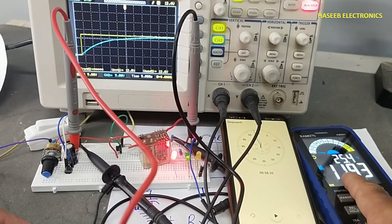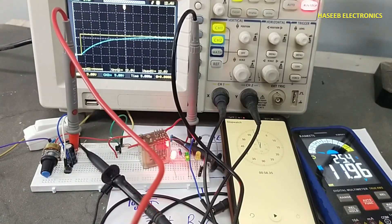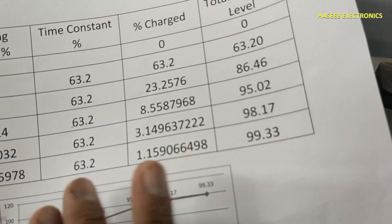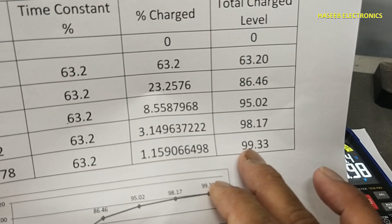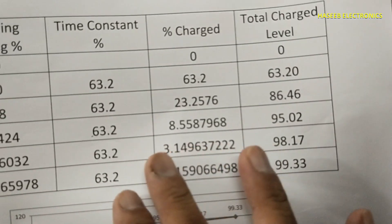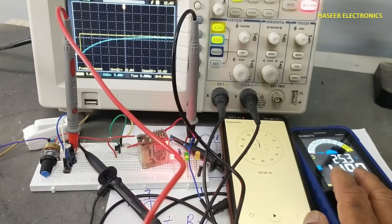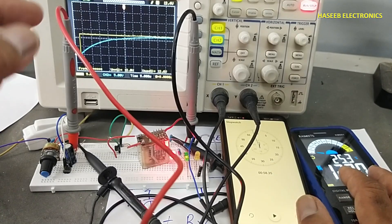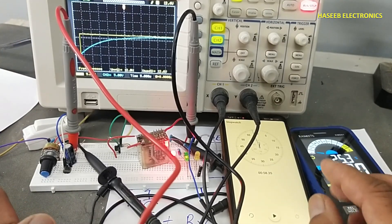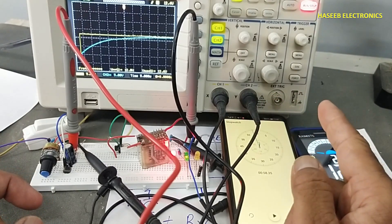And it is around 11.94 volts. We are using 12.3 volt supply, so if we take 99.3 percent of 12 volt supply, the voltage will be the same on the multimeter. So in this way we can monitor the charging time constant of the capacitor, the charging time of the capacitor.